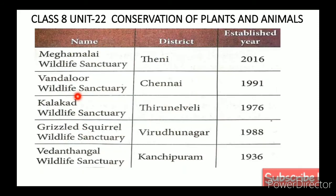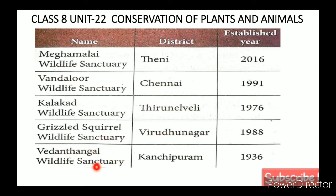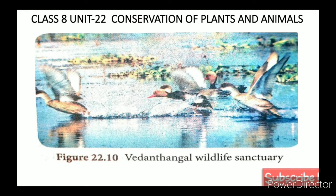Examples of wildlife sanctuaries in Tamil Nadu include: Megamalai Wildlife Sanctuary (2016); a Wildlife Sanctuary established in 1991; one in 1976; Grizzled Squirrel Wildlife Sanctuary (1988); and another sanctuary established in 1936. The lion-tailed macaque is one notable species found in these sanctuaries.